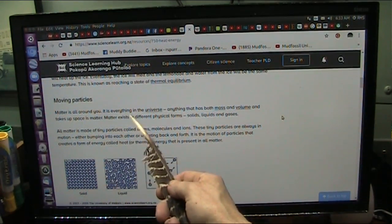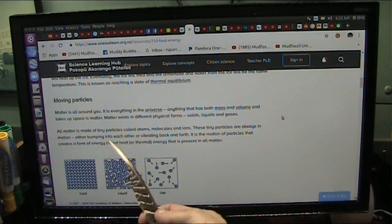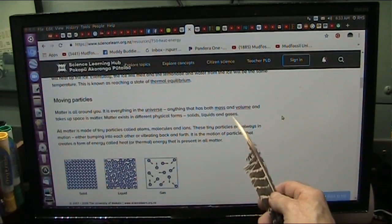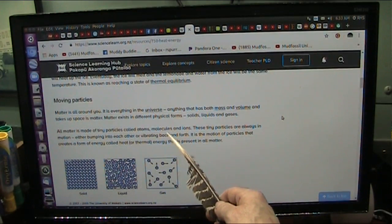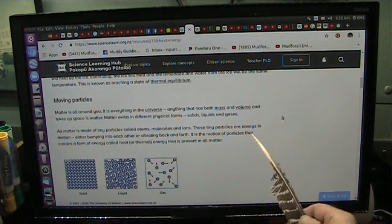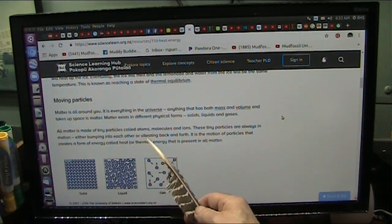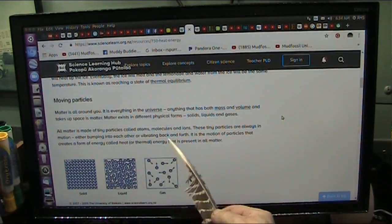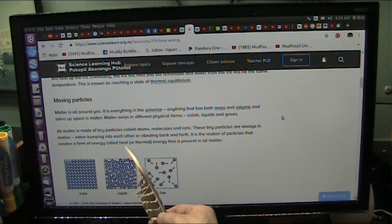All right, matter's all around us in everything in the universe. Anything that has both mass and volume and takes up space is matter. I'll go with that. Matter exists in different physical forms - solid, liquid, and gases. All matter is made of tiny particles called atoms, molecules, and ions. I'll go with that. These tiny particles are always in motion. They're either bumping into each other or vibrating back and forth. I can accept that. It is the motion of particles that creates a form of energy called heat.